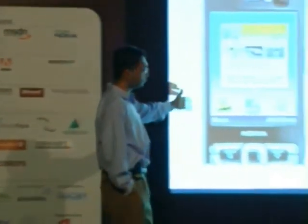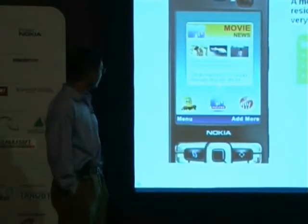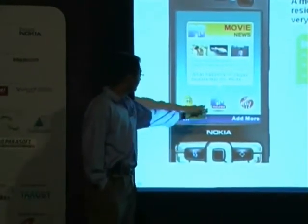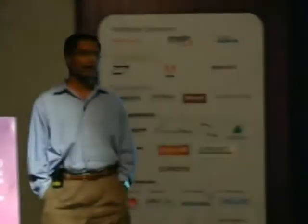This is actually Plusmo running on a mobile device, the Nokia N95. You see your base set of widgets — that's something you've already personalized once. It gives you a carousel view where you can go and customize your widget. You can move around and get an instant snapshot of whatever you want.